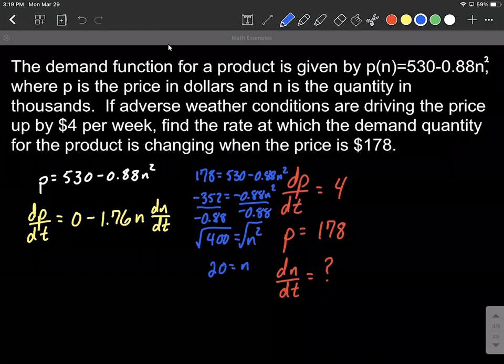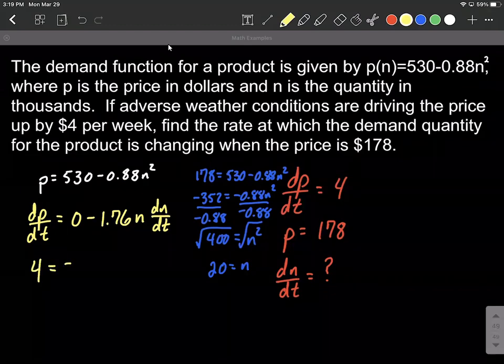All right, so now let's plug in all the information that we've gathered. So we can put 4 in on the left-hand side equals negative 1.76 multiplied by the 20 that we just calculated, dN/dt.